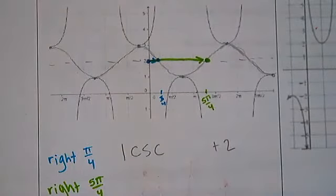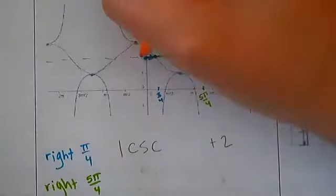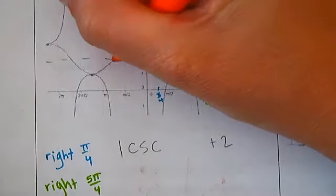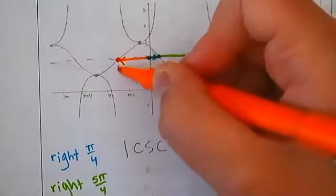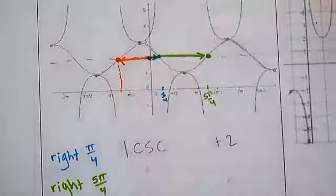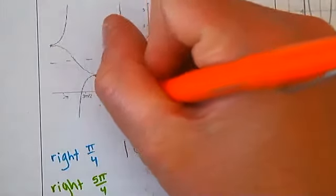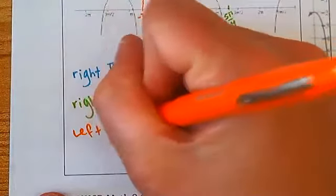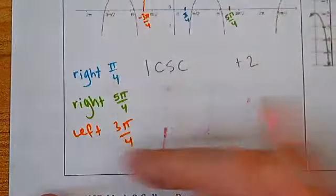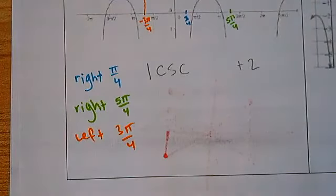Other people may say it actually moved to the left to a point at 3π/4, saying it moved left by 3π/4. All three of these are correct — that's the thing. I want you to be on the lookout for how many different possible answers there could be.